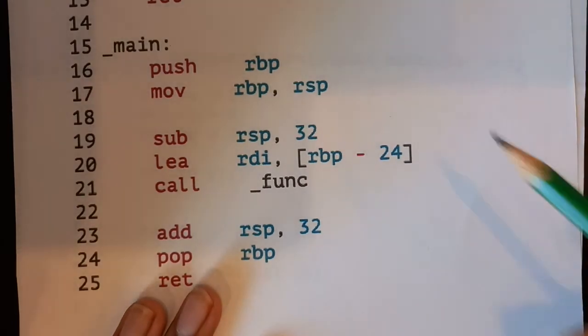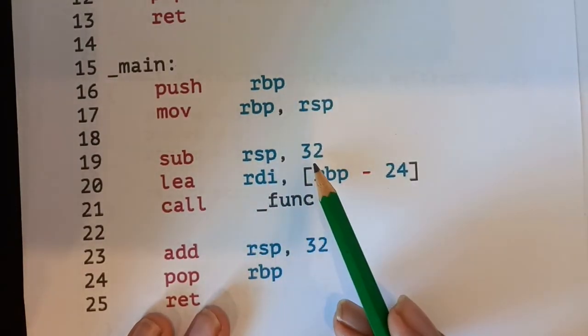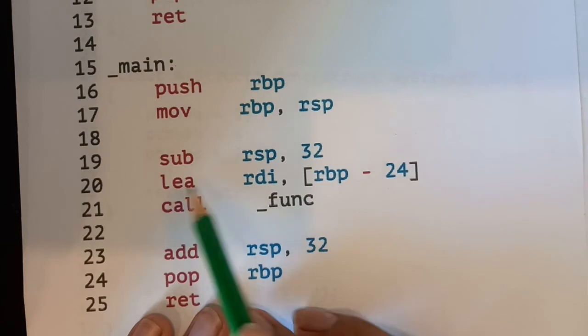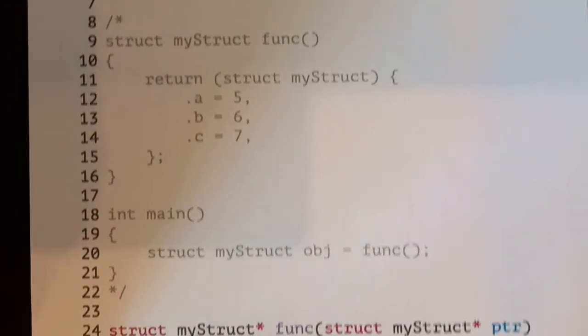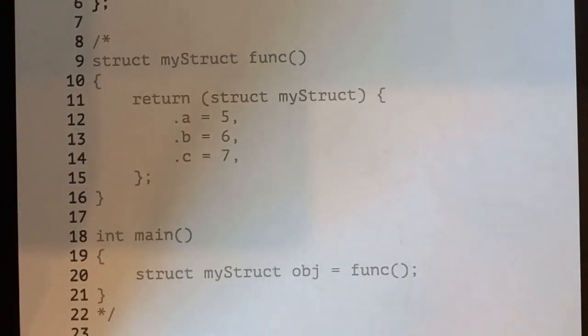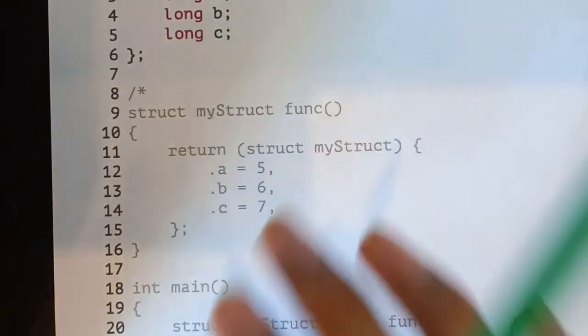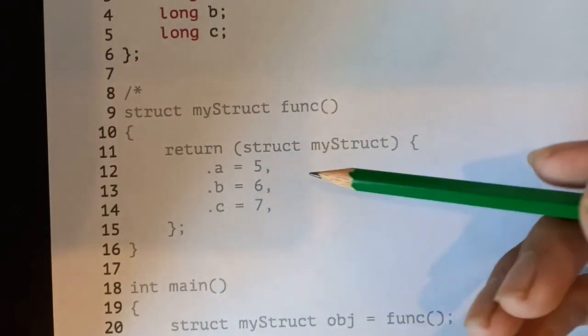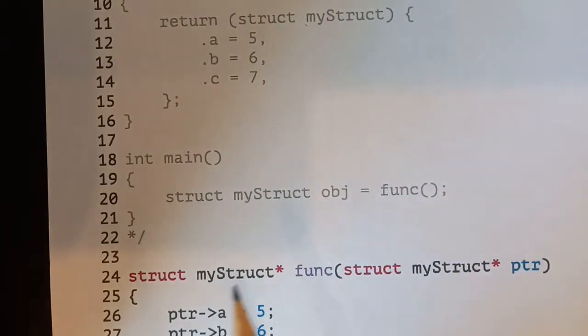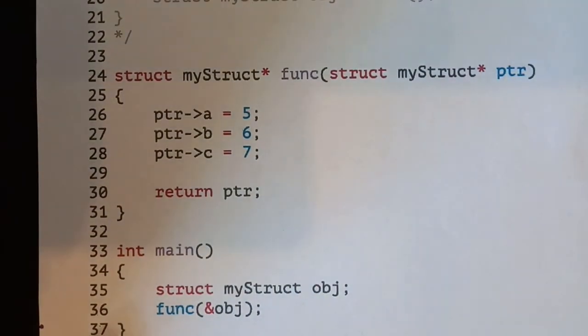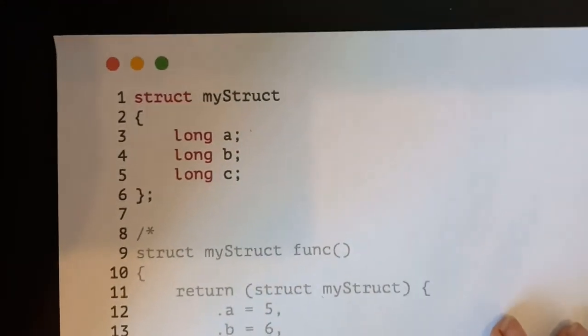And then we just return here. And then our main function, again, this should seem familiar from the array example. We just set up the function, then we just subtract some space. And then again, we load the address of where our struct is going to be, and then we call the function. But one key point I just wanted to make real quickly is that this code here with the pointer is actually identical to this code here that I've just commented out, except I'm passing everything by value. So in this case, my function just returns a struct and my main function just directly calls it. The assembly code produced is functionally identical to the assembly code produced in this case. And the reason for it is really interesting.